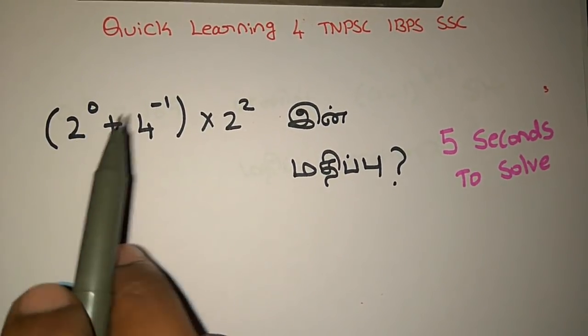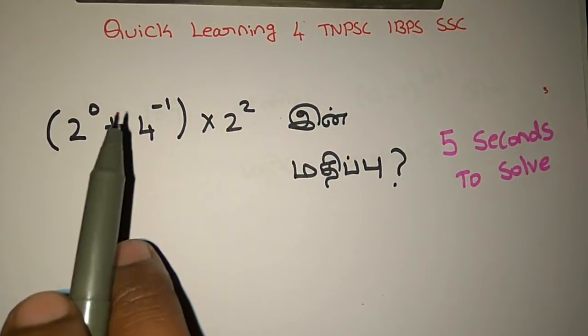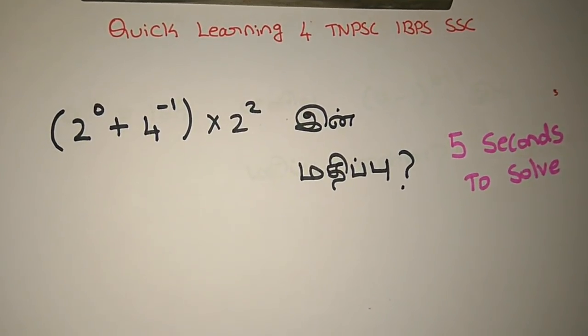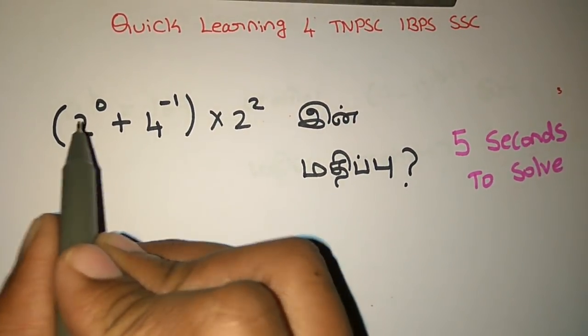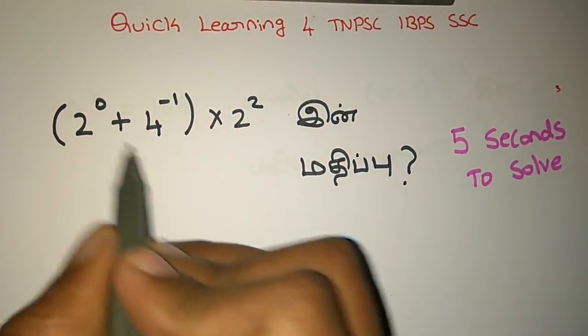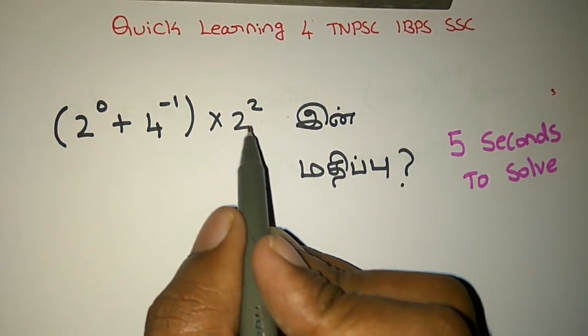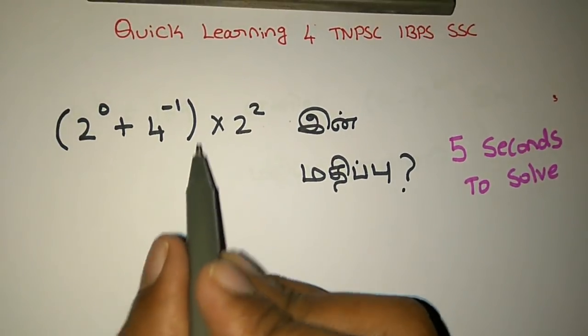The idea is that we can get to work with this. The simple answer is we will reject the following: 2.0 plus 4.1 into 2.2. How can we do this?